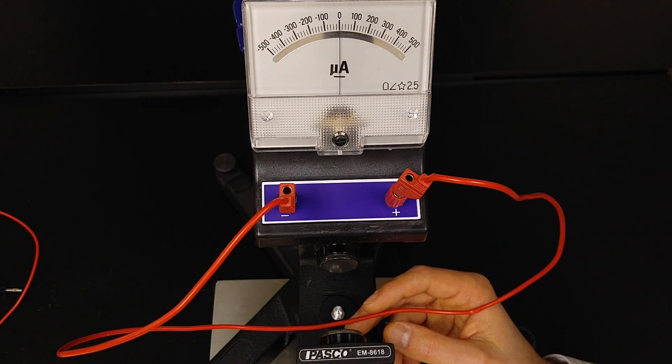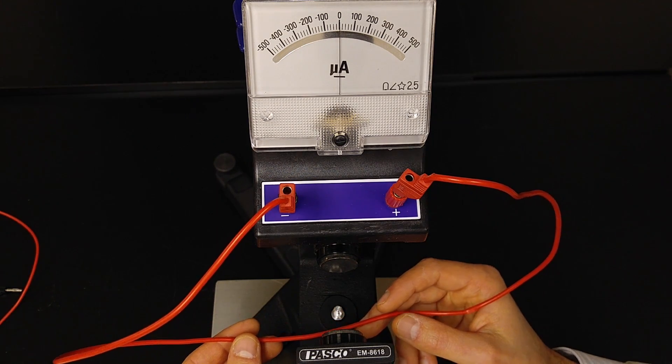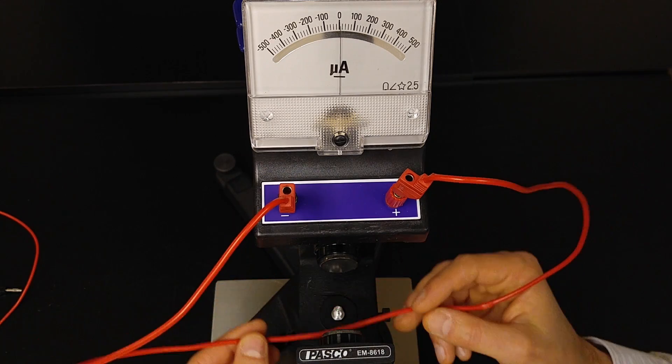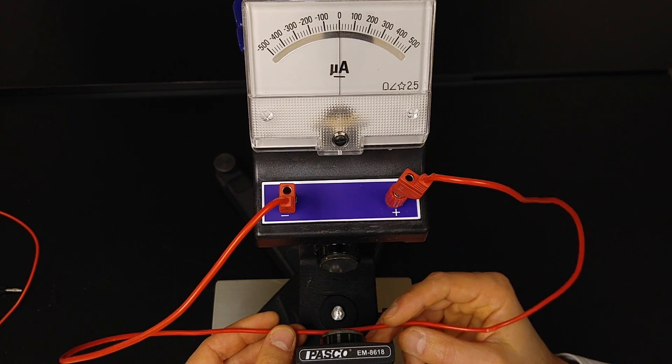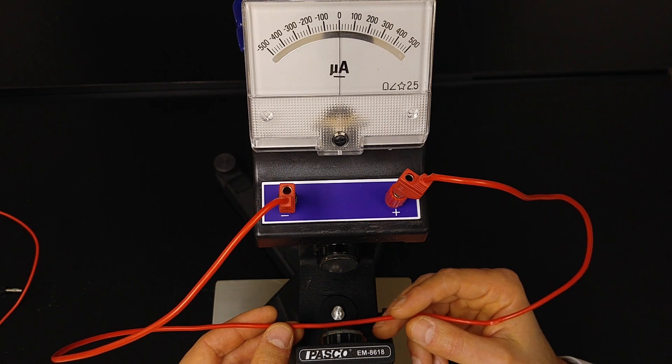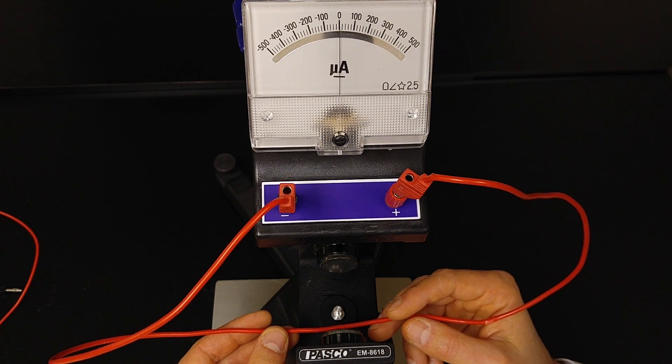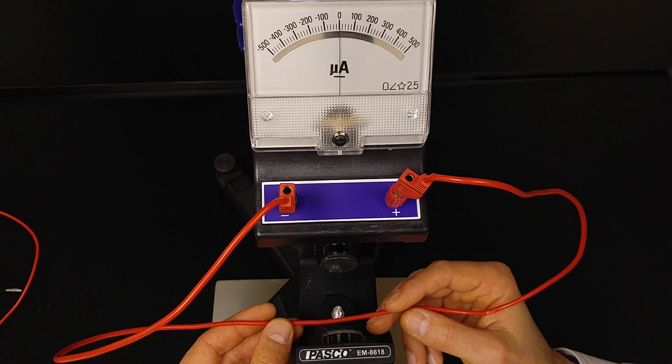So this shows us that a conductor, when it's moving inside of a magnetic field, external to it, inside of that conductor, there's a potential difference that gets created, which causes current flow through it.